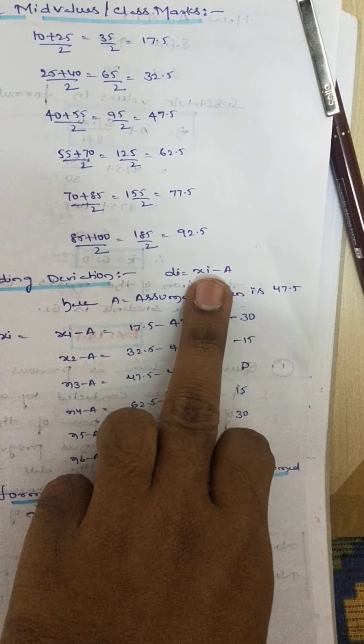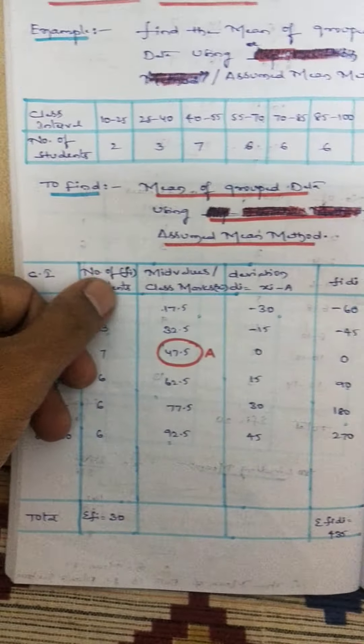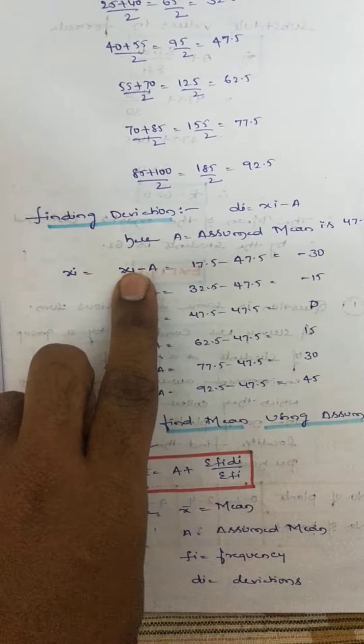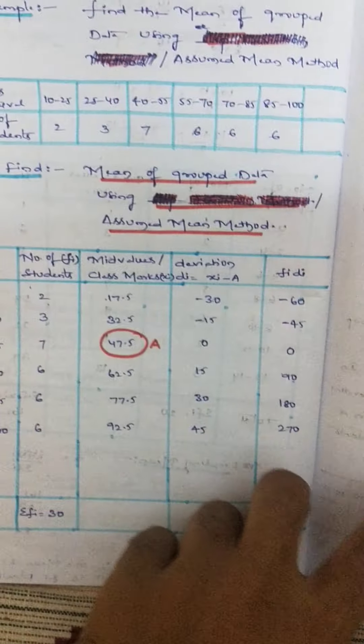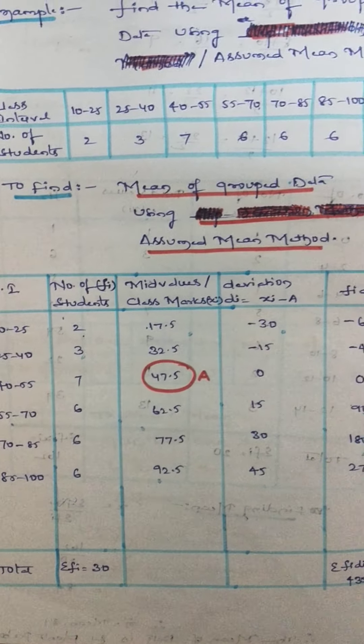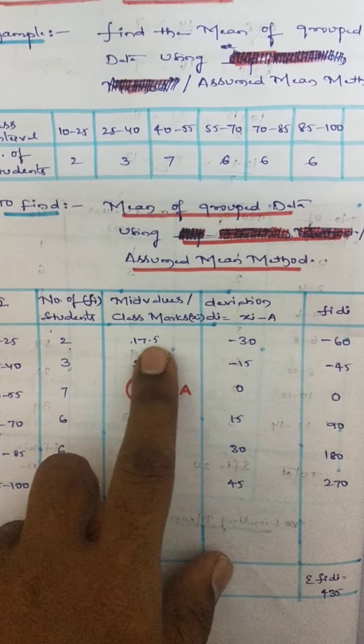So here xi minus A. The i values are 6 students, the given values are 6. So first value, x1 minus A is 17.5. Your first value is 17.5, students.